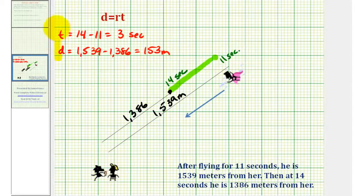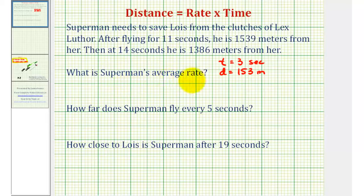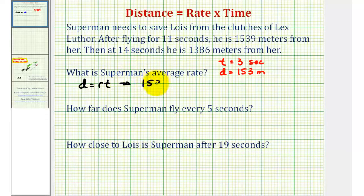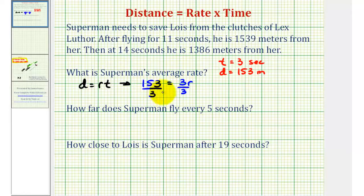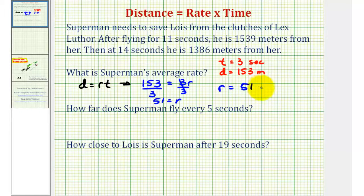Now that we have this information, we can answer the three questions. The first question is: what is Superman's rate? Using the formula distance equals rate times time, we substitute 153 for the distance and 3 seconds for the time, giving us 153 equals 3r. To solve for r, we divide both sides by three. 153 divided by 3 is equal to 51. So the rate r is equal to 51 meters per second.